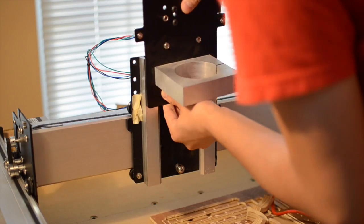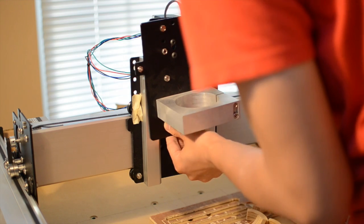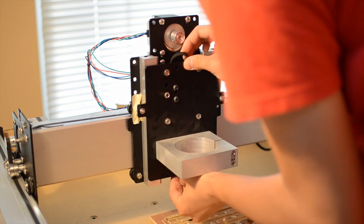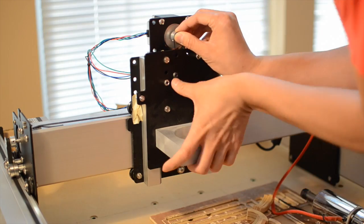I find it easiest to install the Z carriage plate from the top of the extrusions, you just need to remove a couple spacers first. There should be just enough slack to slip the belt over the top of the pulley.